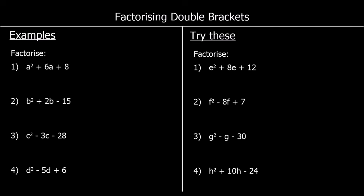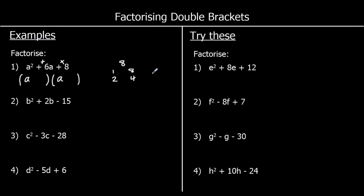Our first question says factorize a squared plus 6a plus 8. We're going to put this into double brackets. We've got an a squared term, which comes from a times a, so we have an a in both brackets. We're looking for two numbers that multiply to make positive 8 and add to make positive 6. What multiplies to make 8? We can have 1 times 8 and 2 times 4. Which of these gives us 6? That's going to be 2 and 4: plus 2, plus 4. And if we expanded this, we'd get back to a squared plus 6a plus 8.